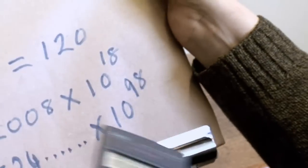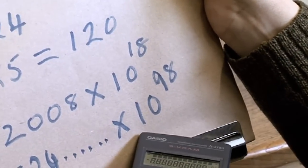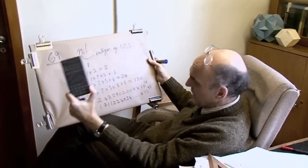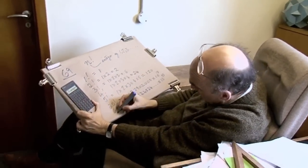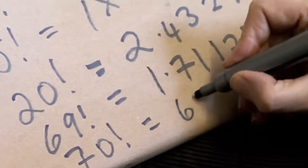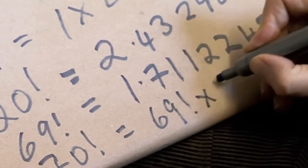Now you can see we're getting quite close to this big number of 10 to 100 here, and it turns out that that is the largest factorial number I can compute on my calculator. If I go to the next number, factorial 70, which of course is just factorial 69 times 70.